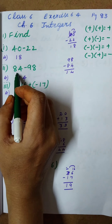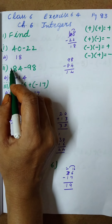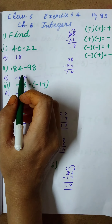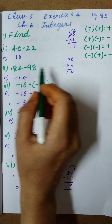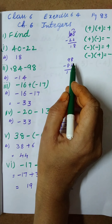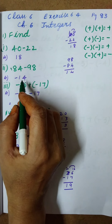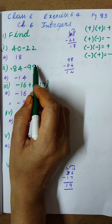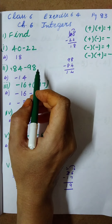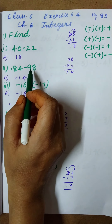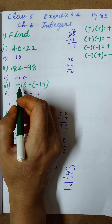Next question: 84 minus 98. Plus into minus — there is no sign for 84, so we take it as plus. Plus into minus gives minus, so we do subtraction from the biggest to the smallest. 98 is the biggest number, so we subtract 84 from 98: 98 minus 84 equals 14. The biggest number is 98 and it has a minus sign, so the answer is minus 14.